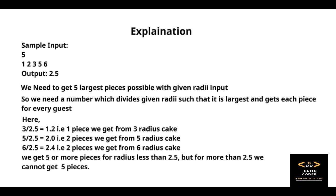When you do 3 by 2.5 you get 1.2, which means that one piece can be cut from three radius cake. Same with the five where you can get two pieces and same with the six where you can get two more pieces.